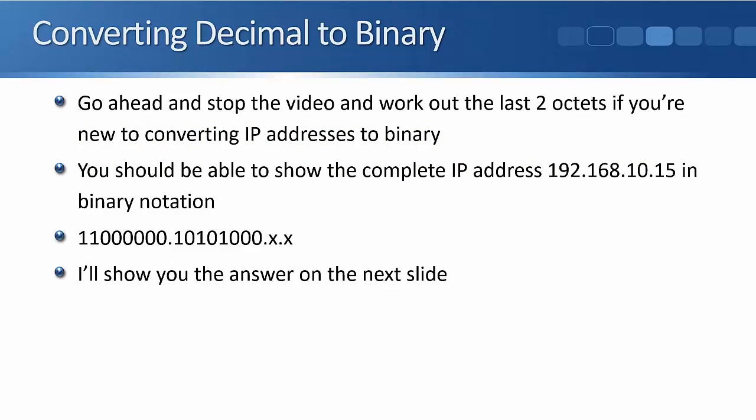What I want you to do now is stop the video and work out the last two octets yourself. Convert 10.15 into binary. When you've done this, give me the entire IP address in binary notation. Your output will be 11000000 dot 10101000 dot, then the next octet in binary, then another dot, then the final octet in binary. Go ahead, stop the video now, and we'll check your answer in a second.